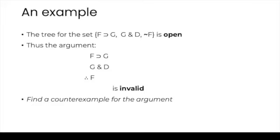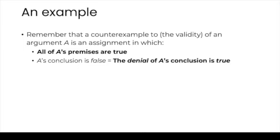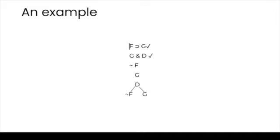Now let's find a counterexample for the argument. A counterexample to the validity of an argument is an assignment in which all of the argument's premises are true and its conclusion is false. The conclusion is false if and only if the denial of that conclusion is true, so we need an assignment in which all the premises are true and the denial of the conclusion is also true. Such an assignment is precisely what an open path of our tree provides. We go back to our tree and pick the left path: we have not F, G, and D. D appears without negation, so we assign it true; F appears negated, so we assign it false; G appears unnegated, so we assign it true. This assignment makes all the premises true and the conclusion false.